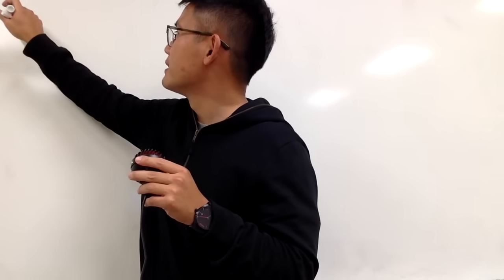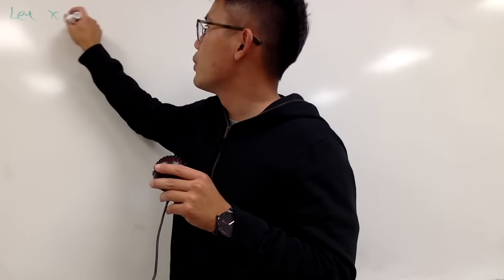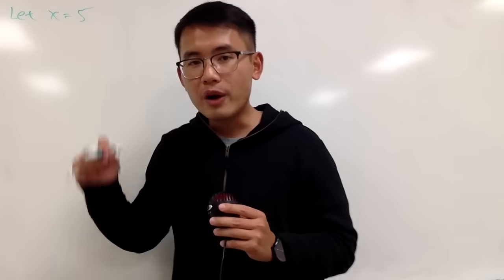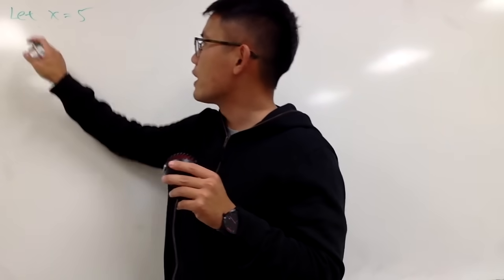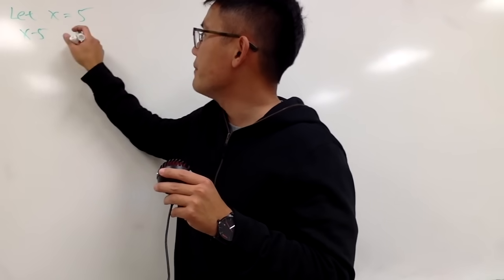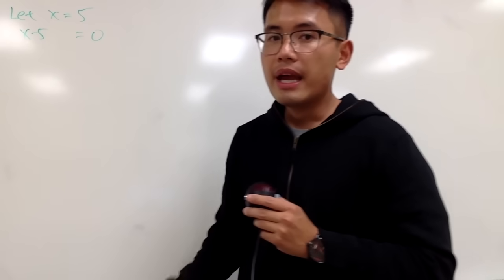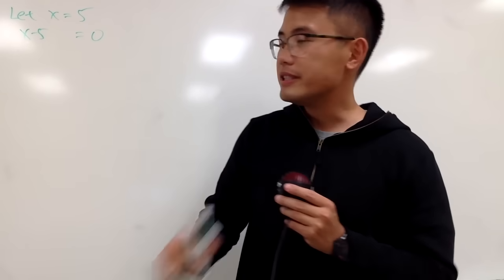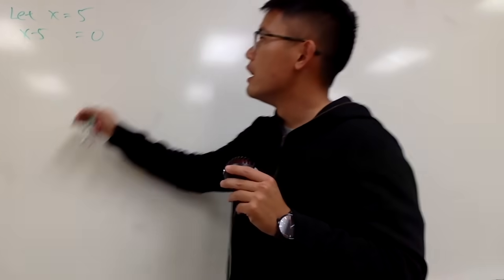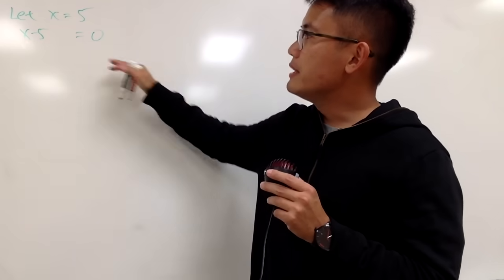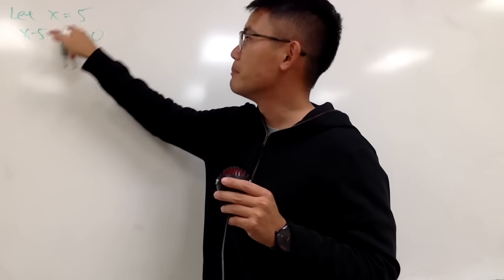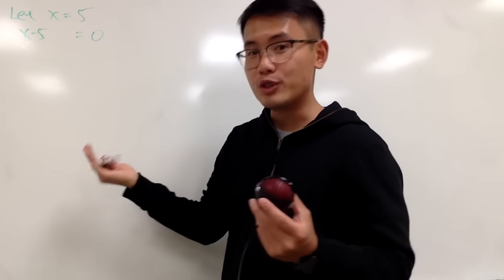I'll begin by saying let x equal to 5. From here, we'll do some algebra. I will subtract 5 on both sides, so I get x minus 5 equals 0. You see that here we have a linear factor, and this linear factor has a positive root — namely positive 5. We chose it.